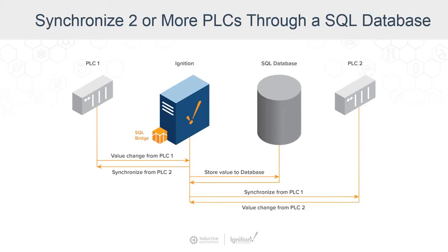We can use a database as the center of our model. Using a transaction group in the SQL Bridge module, we look at both PLCs. When a value changes in PLC 1, it gets synchronized to the database, which then synchronizes it to PLC 2. If the value changes in PLC 2, it synchronizes to the database, and that change propagates down to PLC 1. We can effectively use two transaction groups to synchronize two PLC values bi-directionally, using the database as the middle of the model.